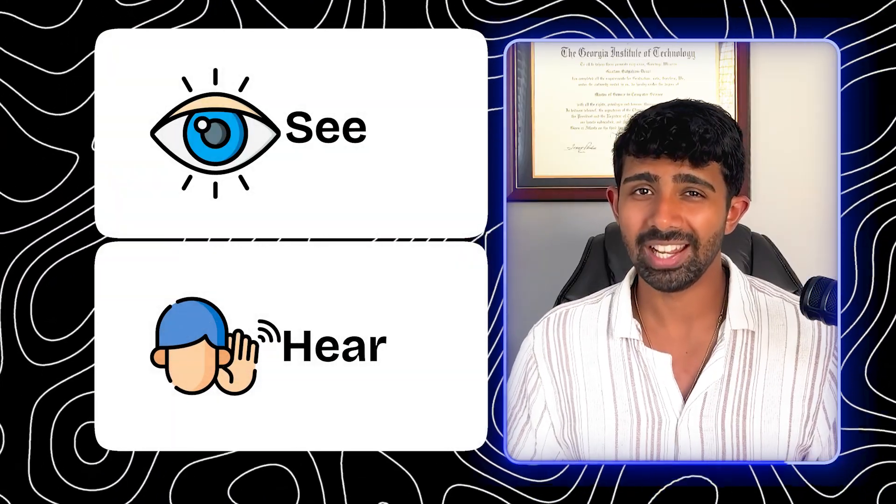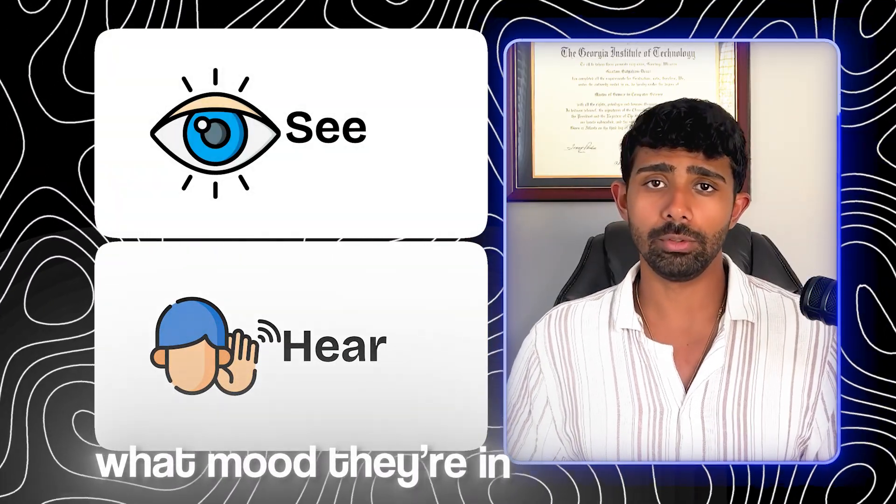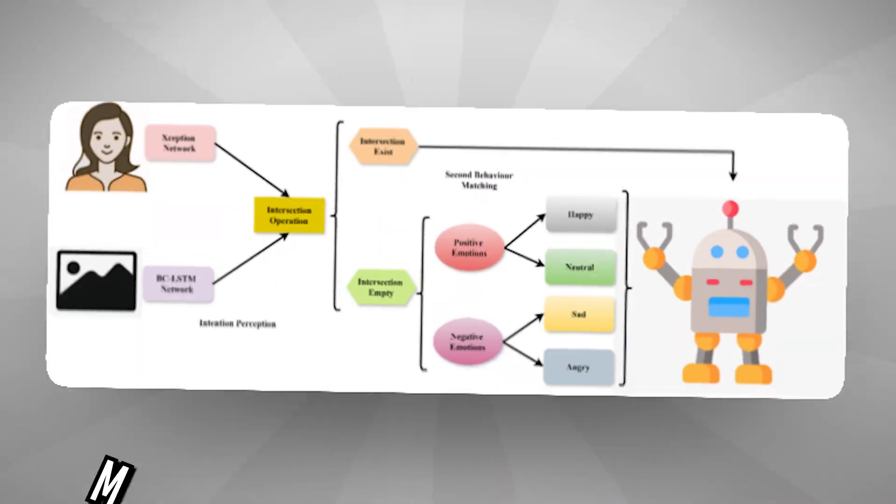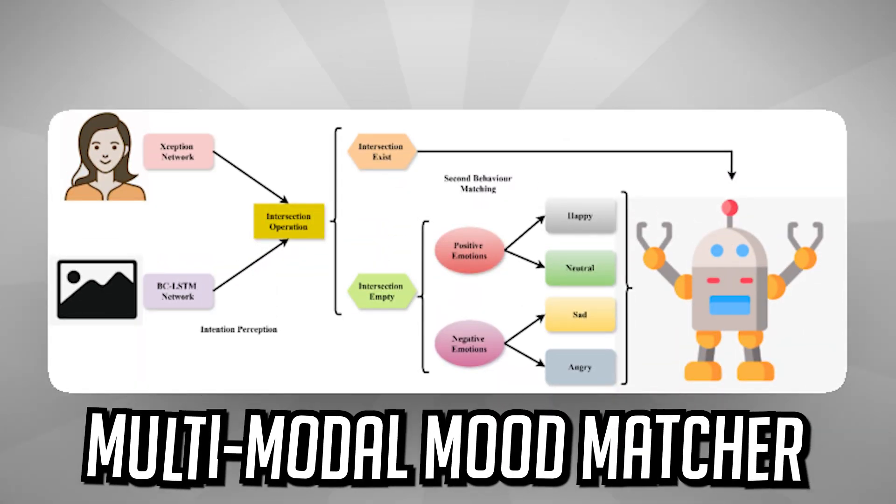What if your project could see and hear someone and instantly tell what mood they're in? Most students build models that only handle one kind of data — text or images. But in the real world, data is multimodal. So if your project doesn't reflect that, then it's soy-tier. And that brings us to project number one: the Multimodal Mood Watcher.